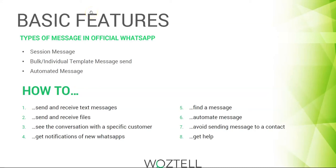Today we are going to talk about basic features of WhatsApp. The types of message in official WhatsApp are session message, bulk or individual template message, and automated message.